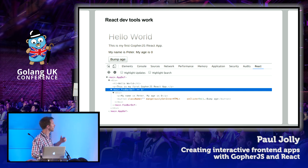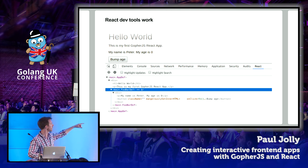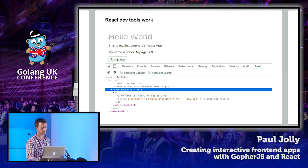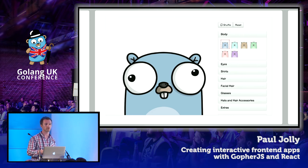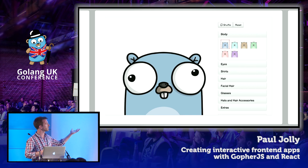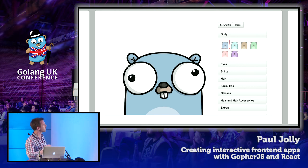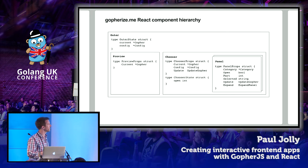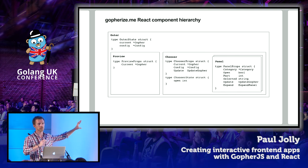This takes us back to the go4eyes.me example rewritten using Go with these React wrappers. The left-hand side is a preview component, and the right-hand side is a chooser component with a number of panels. The panels can be open or closed, and there's a border around the currently selected item. Let's look at this from a pictorial representation of what this looks like in terms of the React app. There's an outer component, a preview component, and a chooser component. Within the chooser component, we're actually rendering a number of different panels.